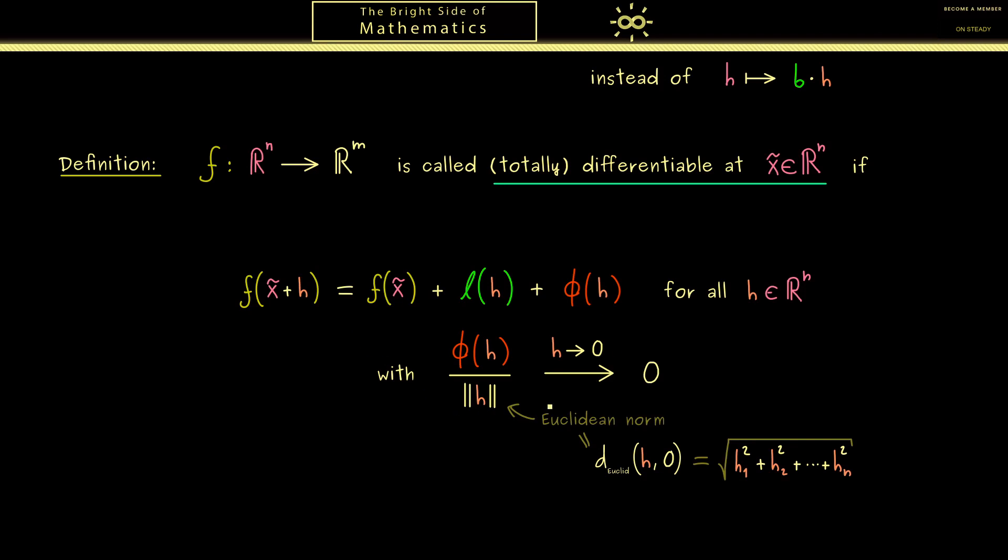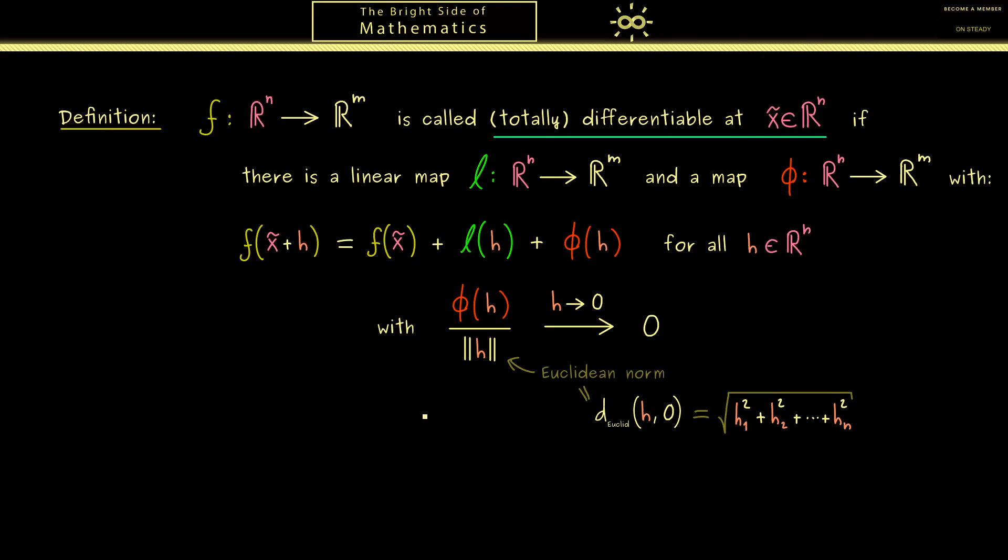There we have it. This here is the definition of total differentiability. We just need the existence of such a linear map L and such an error map phi. And then this here is the defining property of f being totally differentiable at the given point x tilde. And as I told you before, this linear map L is now the new multivariable derivative.